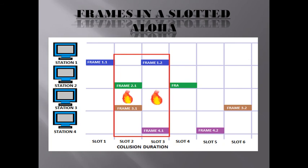Frames in Slotted ALOHA: each frame takes Tfr time. The rule is that a station can only transmit at the starting time of a slot. In slots one, two, and three there is no collision. Stations one and two send packets at the same time in slot four, causing a collision, while slot five works fine. The vulnerable period equals one Tfr — half that of Pure ALOHA — so there is a clear improvement over Pure ALOHA.